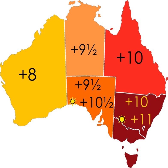Daylight saving time is used in states in the South and Southeast: South Australia, New South Wales, Victoria, Tasmania, and the ACT. It is not currently used in Western Australia, the Northern Territory, or Queensland.